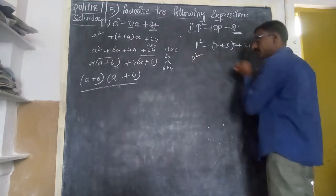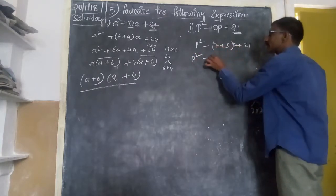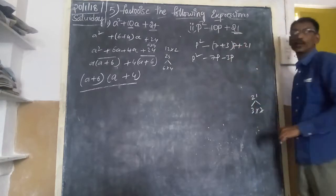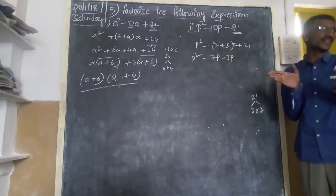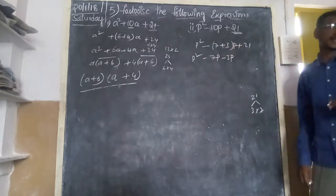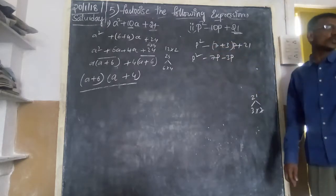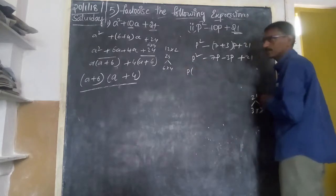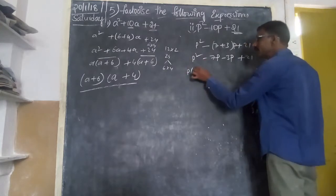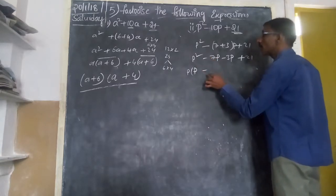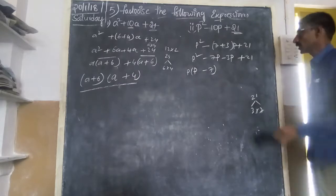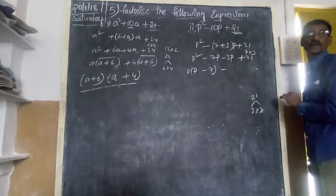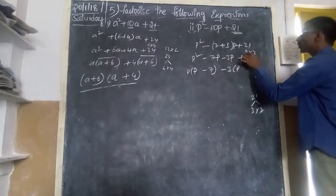So now, you have to... p is multiplied by this one, -7p plus... minus 3p. Between the 7 and 3, it says by multiplying with minus, you get both the terms plus. Now here and here, you have p. Here and here, what you have common? p minus 7.